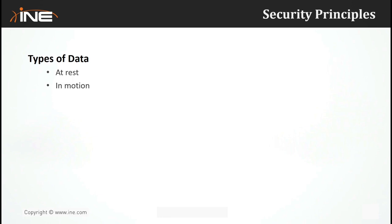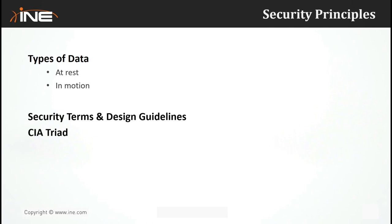The reason we discussed data types at the beginning is that there are different methods to secure data depending on its type. Some solutions work for both data at rest and data in motion, while others only work for data at rest. The first major security term is the CIA Triad, which describes a model used in information security to ensure three critical elements of a secure environment: Confidentiality, Integrity, and Availability.